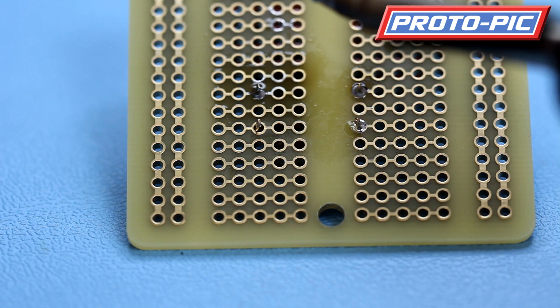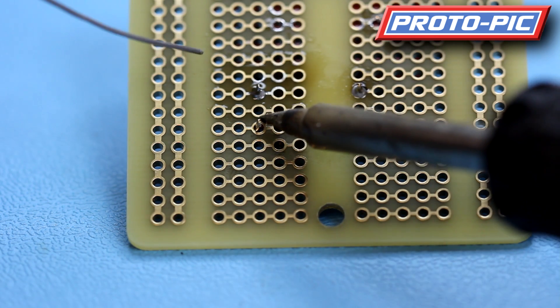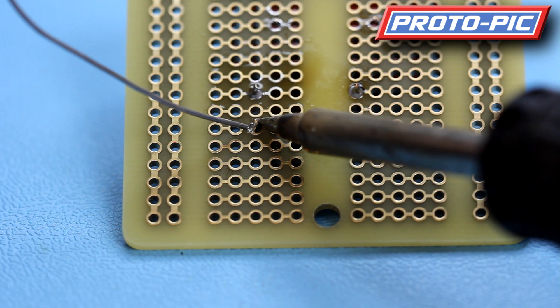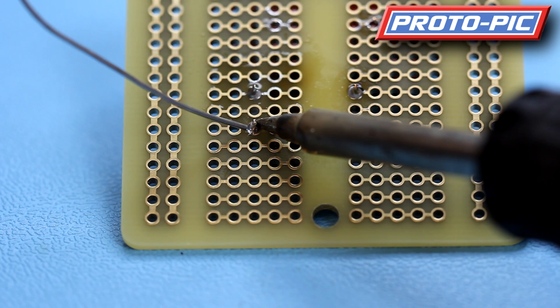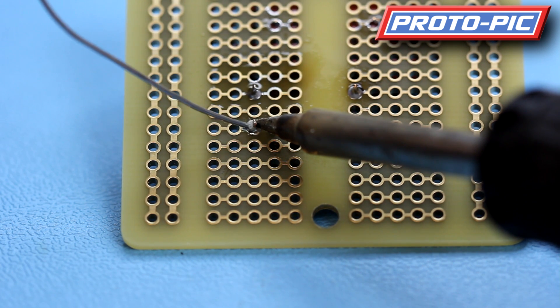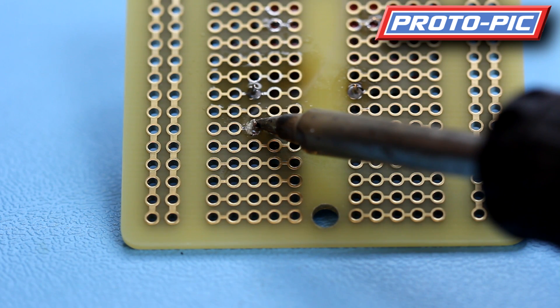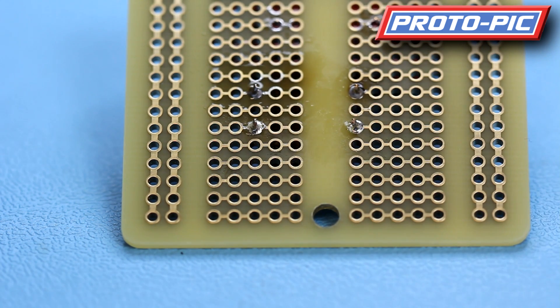So we'll do that again. Let's put a small bead in, let both of them heat up, apply solder to the opposite side, wait for a couple of seconds, and then come out.